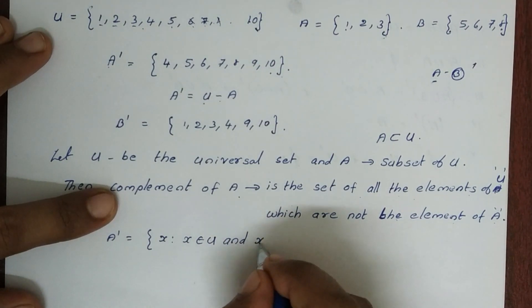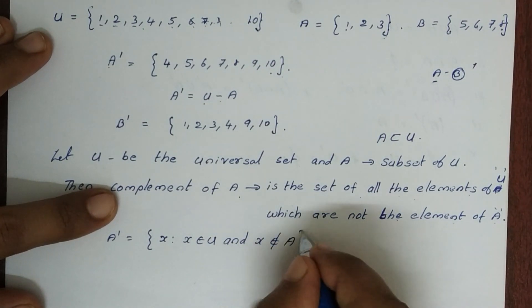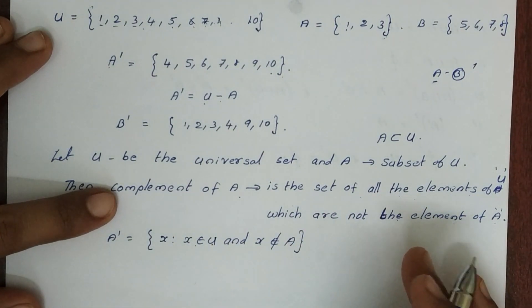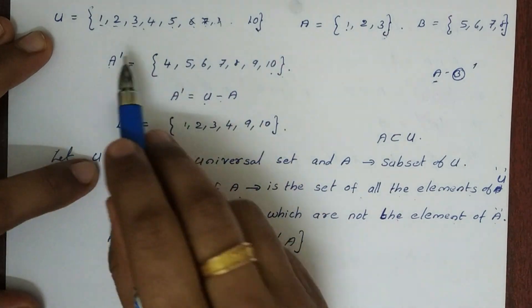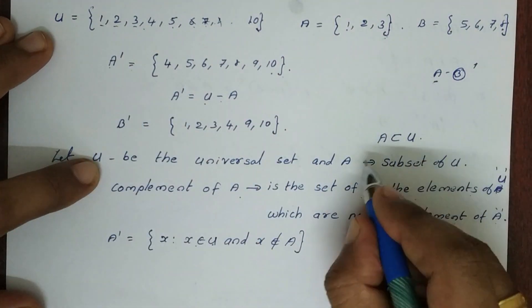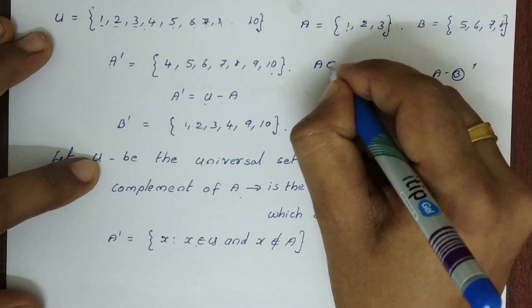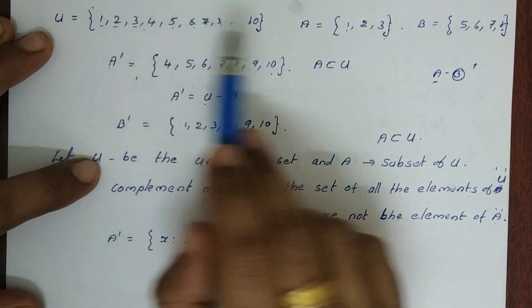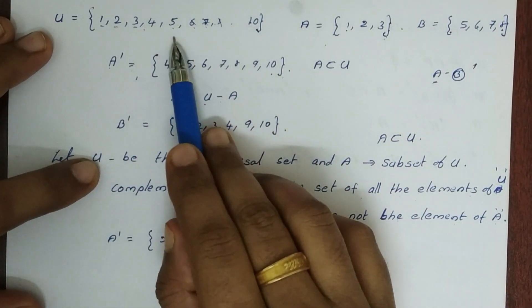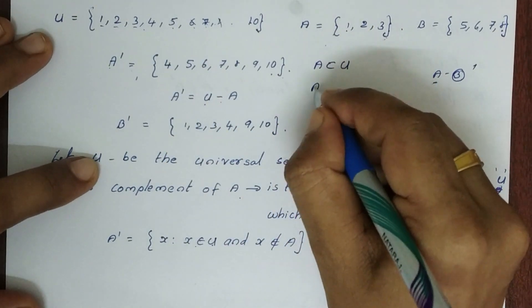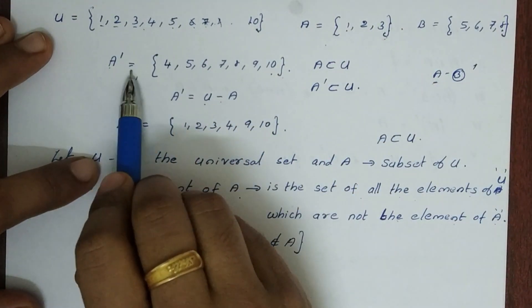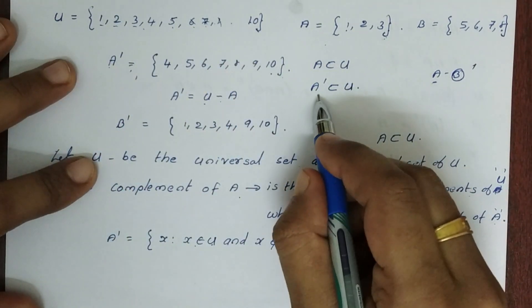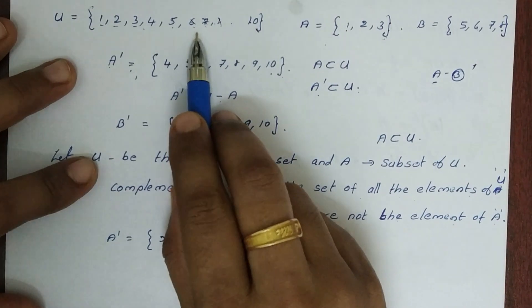U will have its elements and A will have its elements. A is a subset of U, and A complement is also a subset of U.